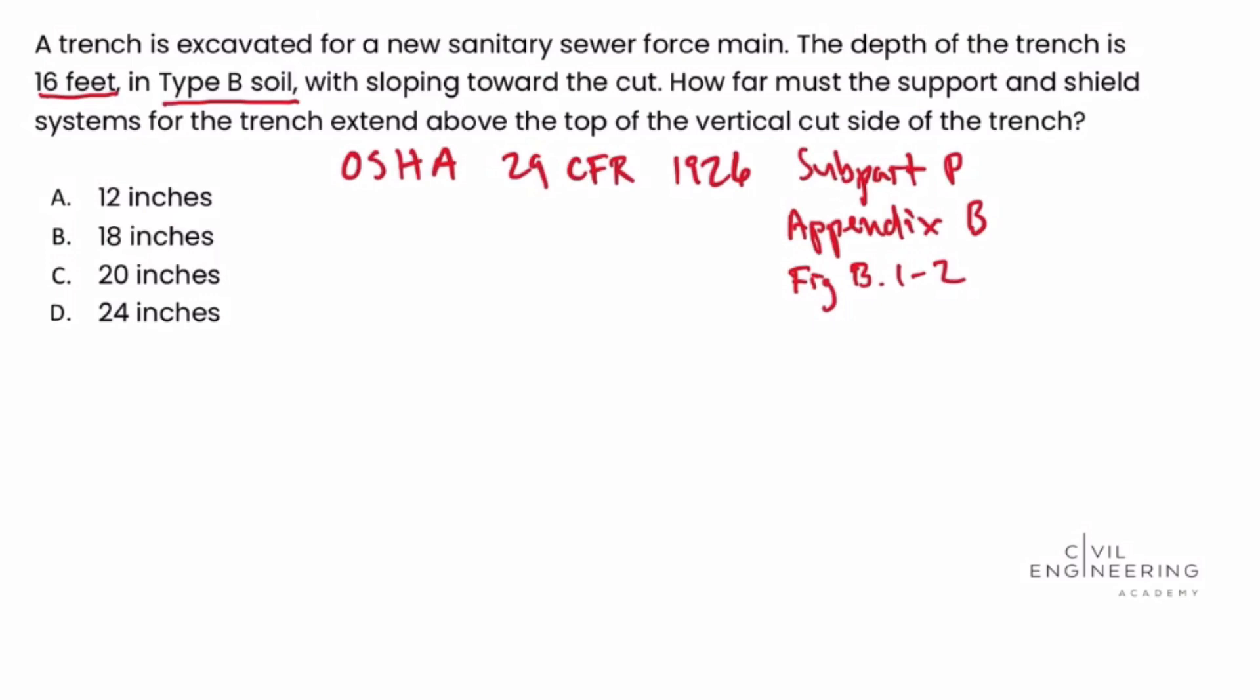So that would apply to us with type B soil. And we're told that excavations 20 feet or less in depth, which have vertically sided lower portions, shall be shielded or supported to a height at least 18 inches above the top of the vertical side.